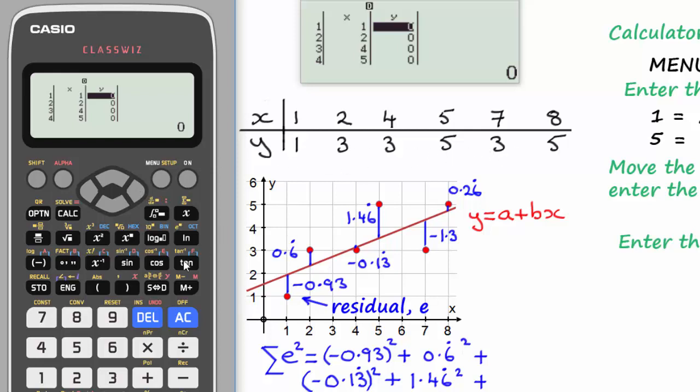And we just repeat the process by entering our y data in here. So we'll start then with 1. So it's 1, enter it by pressing equals, and repeat this. We've got 3 equals, 3 equals, 5 equals, 3 equals, and finally 5 equals.